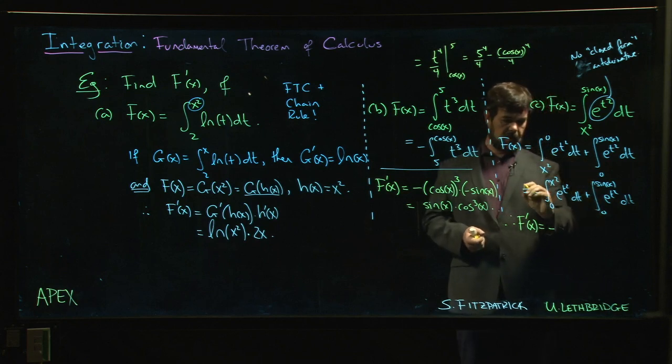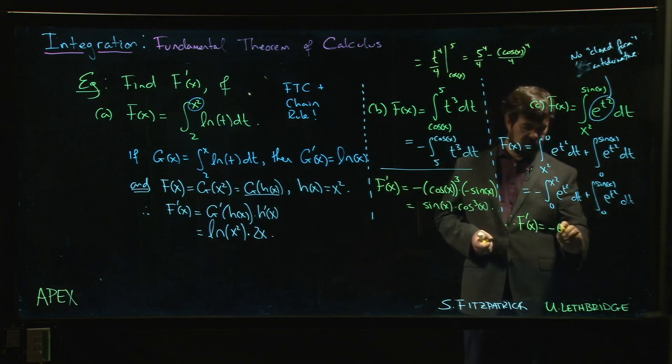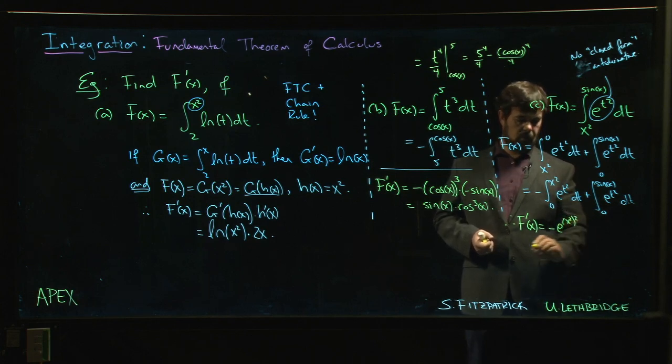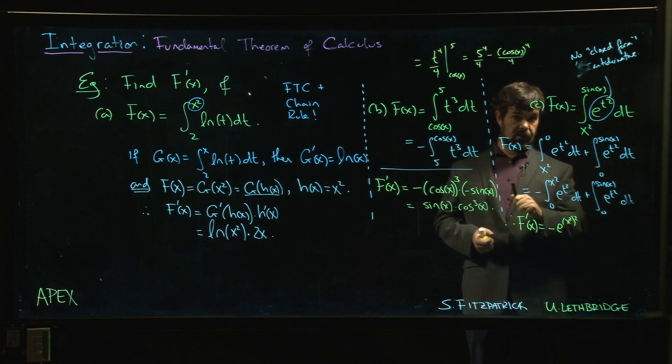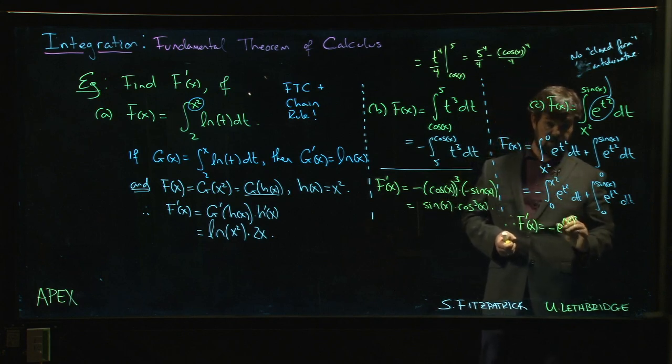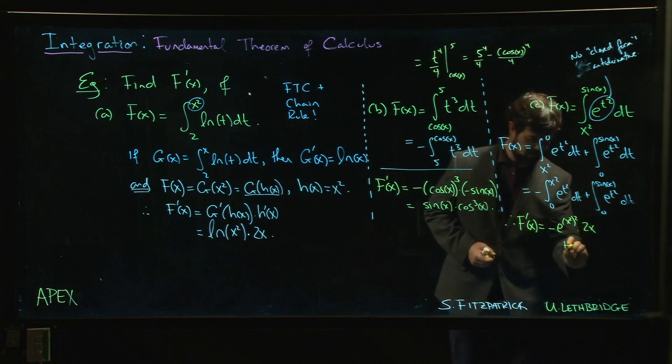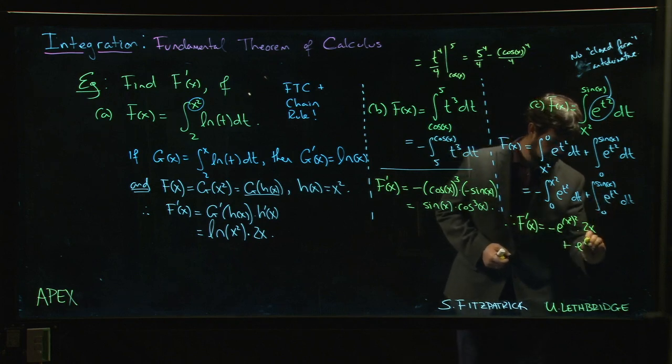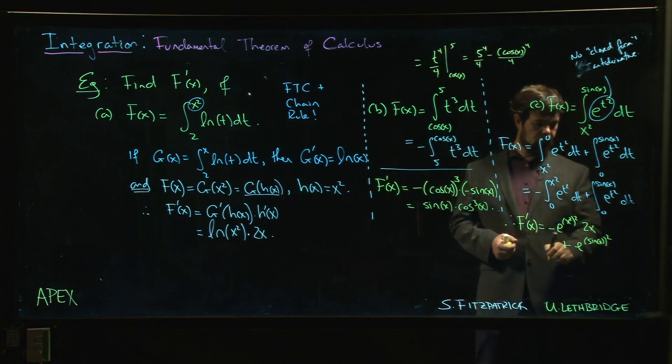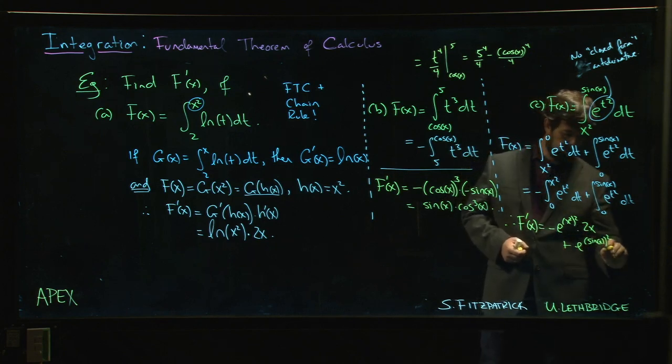So we get, there's a minus sign up front, so e to the t squared—well, now it's going to be x squared squared. But then you've got to multiply by the derivative of that function. Chain rule. 2x. Plus e to the, this time, sin x squared. And then we have to multiply by the derivative, so multiply by cos x.